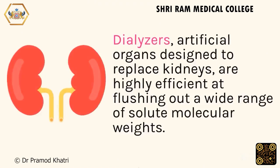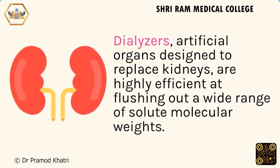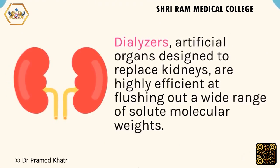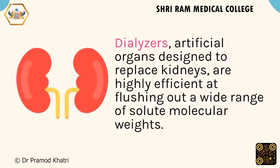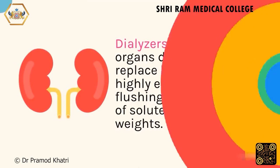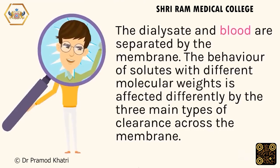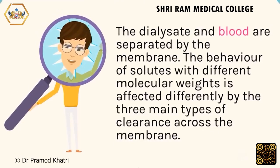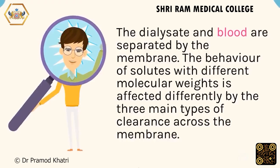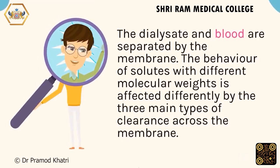Dialysers — artificial organs designed to replace kidneys — are highly efficient at flushing out a wide range of solute molecular weights. The dialysate and blood are separated by the membrane, and the behavior of solutes with different molecular weights is affected differently by the three main types of clearance across the membrane.